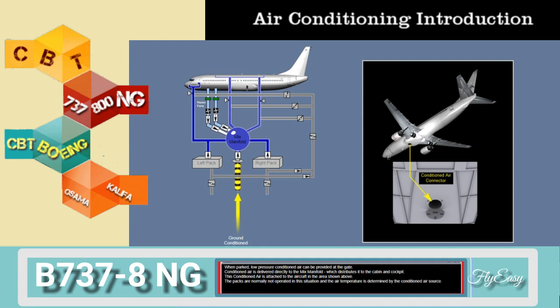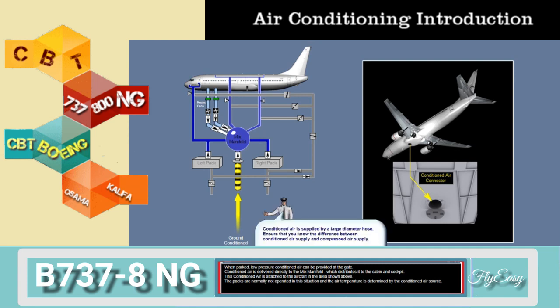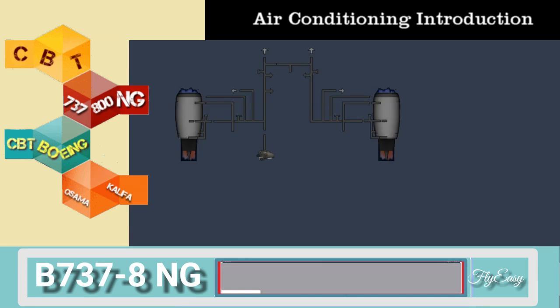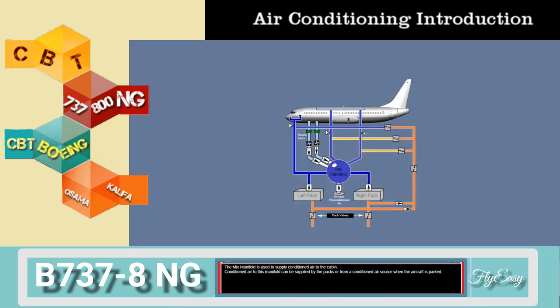When parked, low pressure conditioned air can be provided at the gate. Conditioned air is delivered directly to the mix manifold, which distributes it to the cabin and cockpit. The conditioned air is attached to the aircraft in the area shown. The packs are normally not operated in this situation. The mix manifold is used to supply conditioned air to the cabin, and can be supplied by the packs or from a conditioned air source when the aircraft is parked.